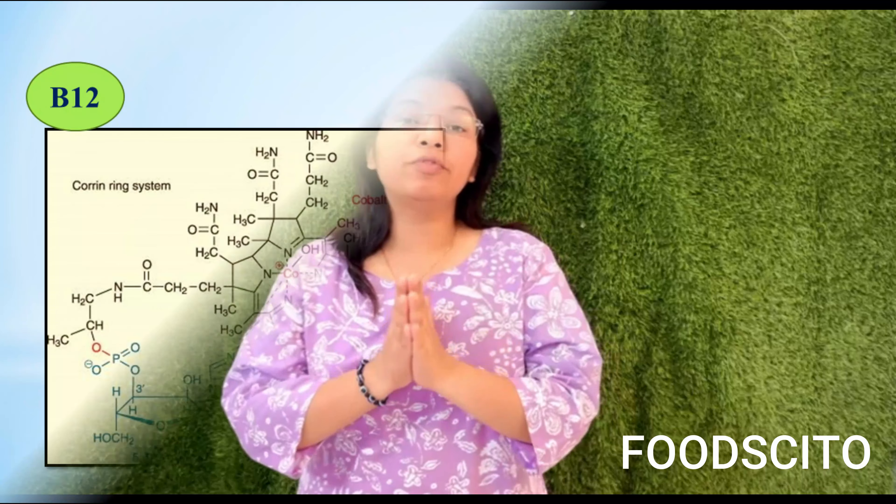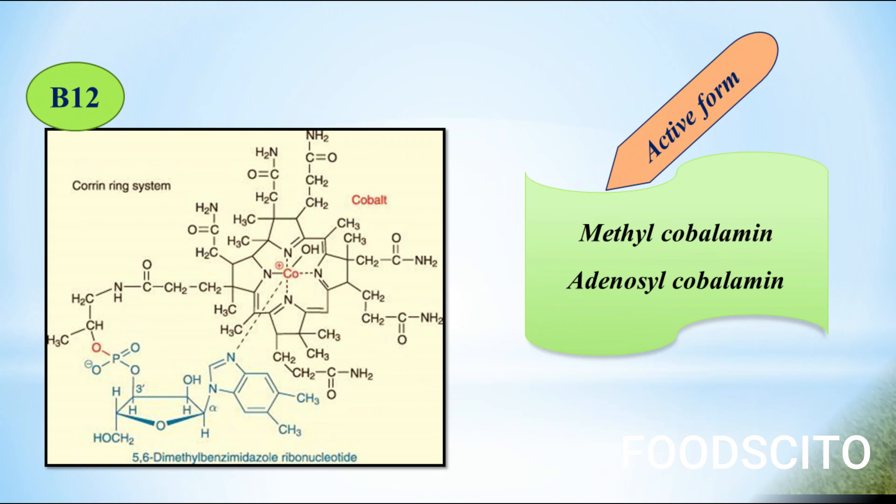A corin ring is a heterocyclic compound, and its structure is similar to the porphyrin ring in hemoglobin. The active forms of Vitamin B12 are methylcobalamin and adenosylcobalamin.